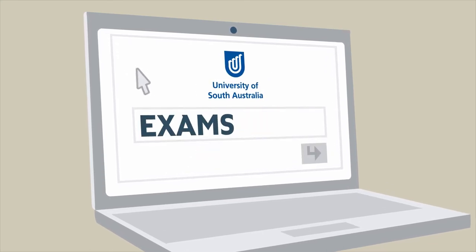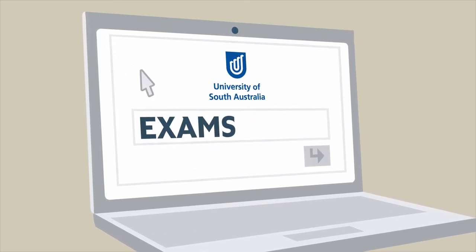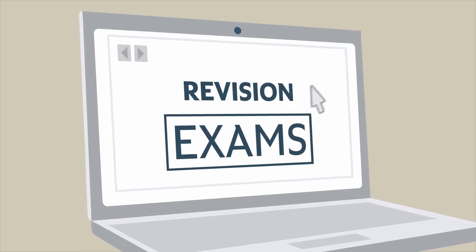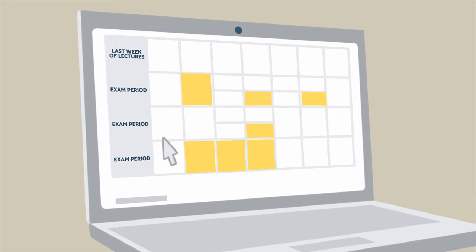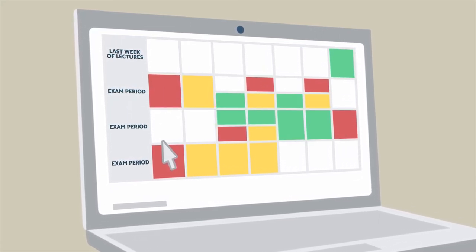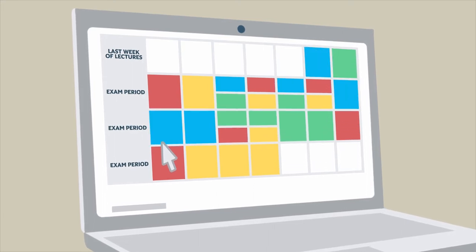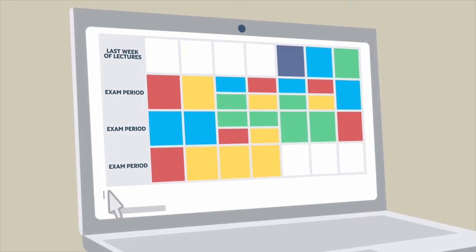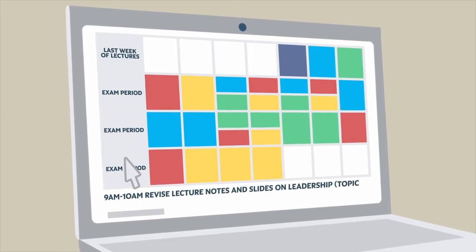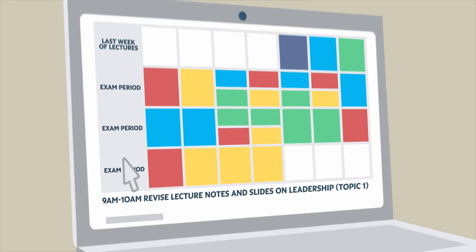Next, see what revision and exam preparation resources are provided on your course's homepage. Now it's time to draw up a revision planner. Make sure you allocate enough time to cover the content of every course. Use a different colour for each course and write down what lecture topic you plan to revise. Your big picture planner will help you plan for each day.